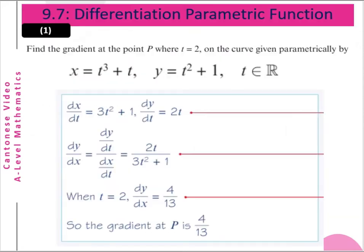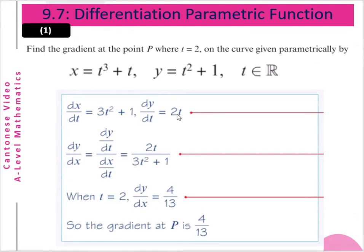Example 1: Find the gradient at point P where t equals 2 on the curve given parametrically by x equals t³ plus t and y equals t² plus 1, where t belongs to the real numbers. So dx/dt equals 3t² plus 1, dy/dt equals 2t, and dy/dx equals dy/dt divided by dx/dt, which is 2t divided by 3t² plus 1.